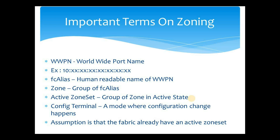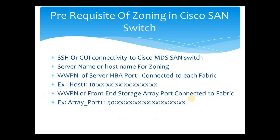Config terminal is the terminal mode where all configuration changes happen in Cisco MDS SAN switch. We will assume that the fabric already has an active zone set, as zoning is a task for beginners and you will definitely have an active zone set already created. Prerequisites for zoning in Cisco MDS SAN switch: we must have SSH or GUI connectivity to the switch, the server name or hostname for zoning, the WWPN of the server HBA port connected to each fabric, and the WWPN of the front-end storage array port connected to the fabric.